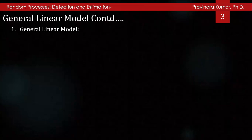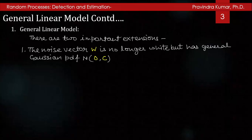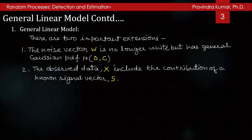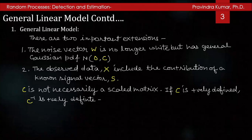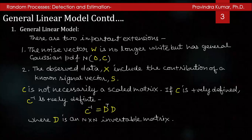We start with the general linear model. Two important extensions are: first, the noise vector omega is no longer white but has a general Gaussian distribution with mean 0 and covariance matrix C. Second, the observed data X also includes the contribution of a known signal vector S. Here C is not necessarily a scaled identity matrix. If C is positive definite then C inverse is also positive definite, and C inverse equals D transpose D where D is an n-by-n invertible matrix.